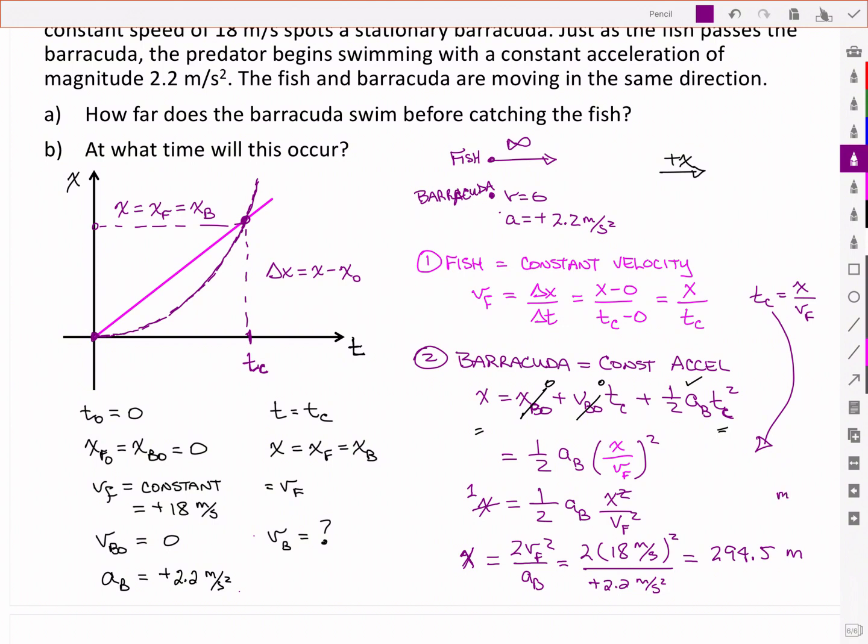So if I look at my units, I've got meters squared divided by second squared, all divided by meters per second squared. And I'm left with just meters. And if I use the correct significant digits, that's going to be 290 meters.